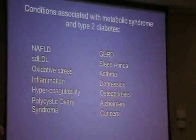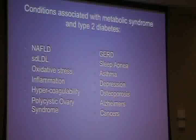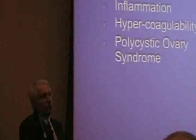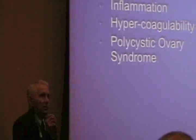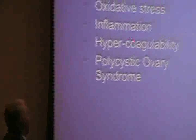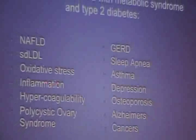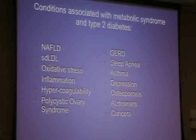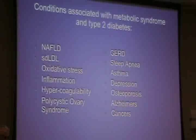We also know from observational work that other things cluster around insulin resistance. If you're anywhere on that pathway — obesity, metabolic syndrome, type 2 diabetes — you're at greater risk for: fatty liver, small dense LDL, oxidative stress, inflammation, hypercoagulability, polycystic ovary syndrome, gastroesophageal reflux, sleep apnea, asthma, depression, osteoporosis, Alzheimer's, and a number of cancers. All now associate with higher levels of insulin resistance.